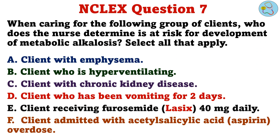Question 7. When caring for the following group of clients, who does the nurse determine is at risk for development of metabolic alkalosis? Select all that apply. A. Client with emphysema. B. Client who is hyperventilating. C. Client with chronic kidney disease. D. Client who has been vomiting for 2 days. E. Client receiving furosemide 40mg daily. F. Client admitted with acetylsalicylic acid overdose.